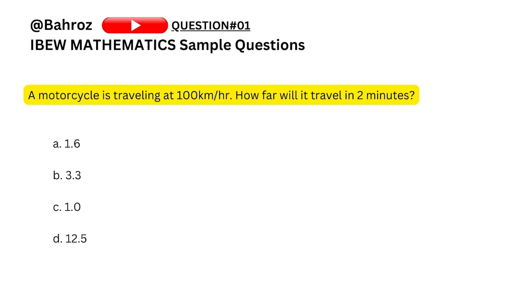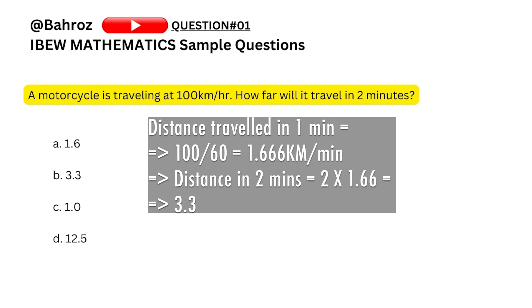Without further wait, let's start going into those sample questions. Question one: calculate the distance traveled in one minute. We have 100 kilometers per hour, so 100 divided by 60 is 1.666 kilometers per minute. In two minutes the motorcycle will travel 3.33 kilometers, which is 2 times 1.666. So the answer is B, which is 3.33 kilometers.